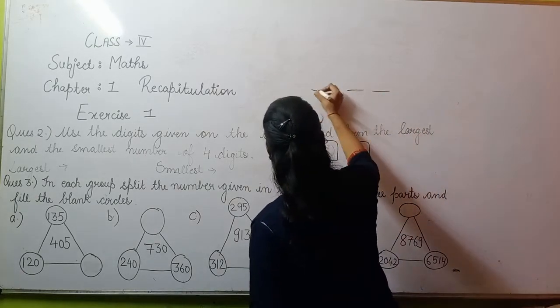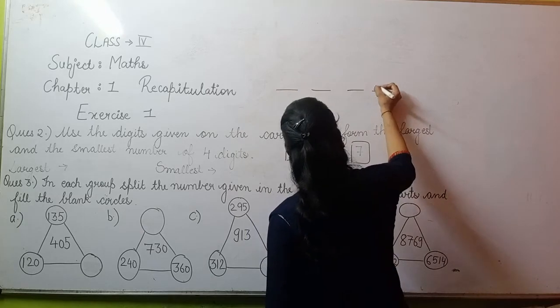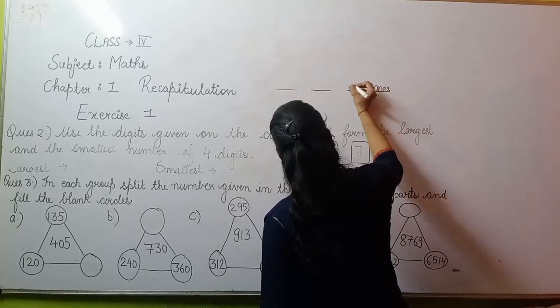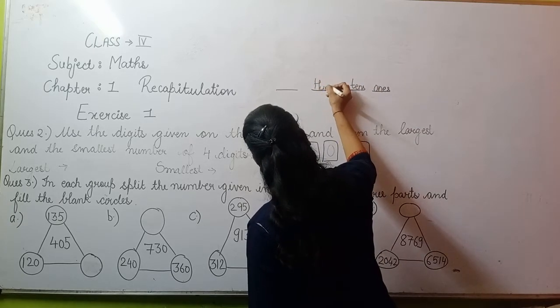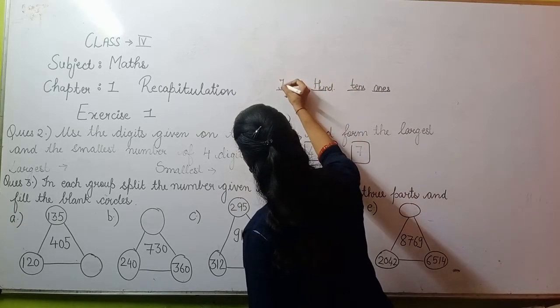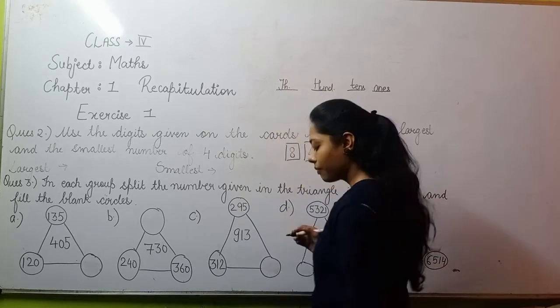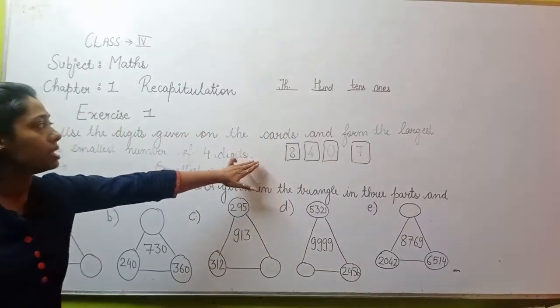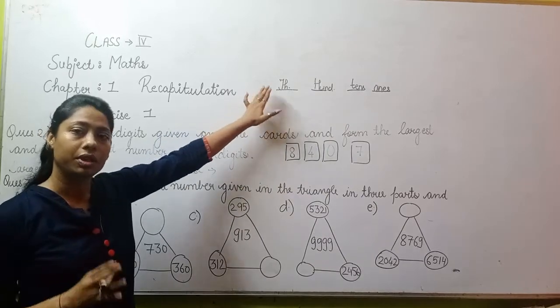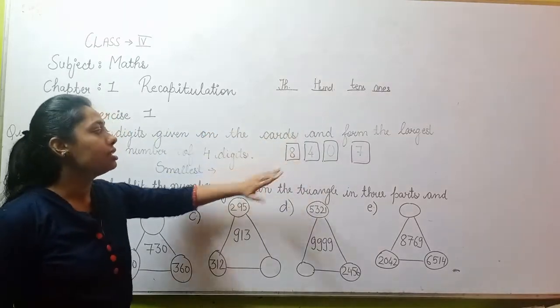Here you have 4 cards given with numbers written: 8, 4, 0, and 7. You have to use these numbers and make the largest and smallest number. First of all, if you look at the place values: there is 1's place, then 10's place, then 100's place, and then 1000's place. In the 1000's place, you have to write the biggest number. It will always be the largest number.